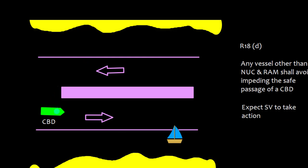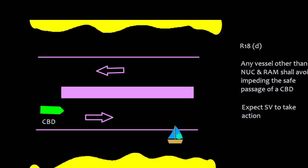Finally, if you are a CVD following the appropriate traffic lane and there is a sailing vessel: as per Rule 18D, any vessel other than NUC and RAM shall avoid impeding the safe passage of a CVD, so you expect the sailing vessel to take action to keep clear.